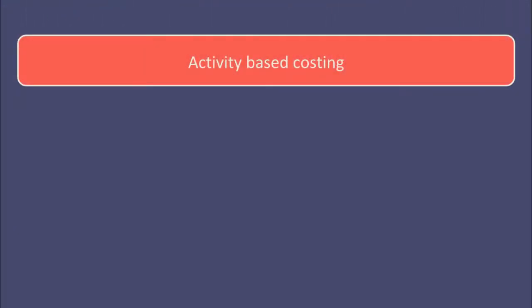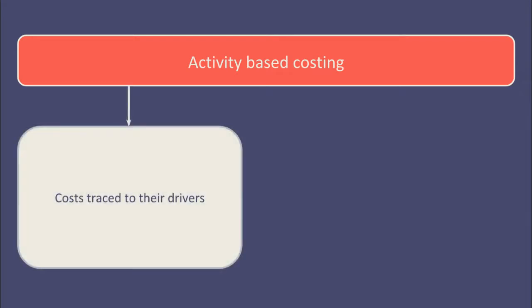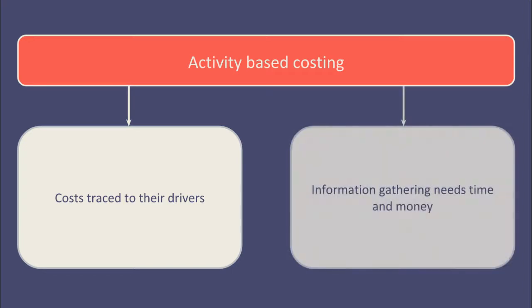Activity-based costing can be used. For example, cleaning up waste water before it's pumped out into a river will generally be treated as a factory overhead. However, if the cost of cleaning it up can be related specifically to the products that drive that pollution in the first place, then polluting products will be relatively more expensive and so less attractive to produce. However, like all applications of activity-based costing, additional information is required which takes time and money to gather.